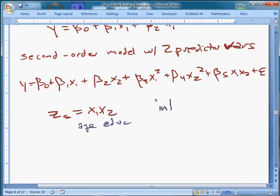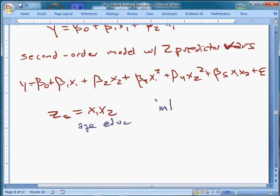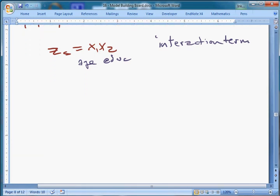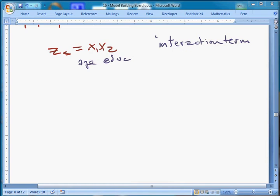You can use this to determine if the return to education changes with age. If x1 is age and x2 is education, you can find out if education is useful, but the value of it doesn't kick in until you hit your late 30s or something, or maybe it's most useful when you first get out of college, and then after time, it tapers off. This is called an interaction term.